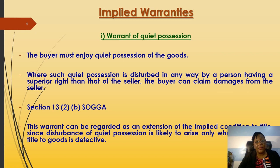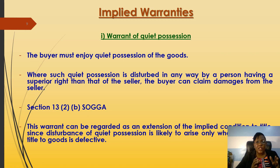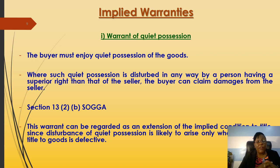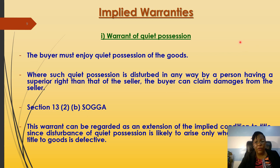Now let's look at implied warranties. The difference between a condition and a warranty is that a condition is a major term of a contract and a warranty is a minor term. For example, if you're traveling from Mombasa to Nairobi, the condition is the journey itself, while the warranty is the minor side distractions along the way. If there's a breach of a major condition, it gives you the right to reject and cancel the contract. But if there is a breach of a warranty, it only allows the aggrieved party to claim damages — they cannot cancel the contract.